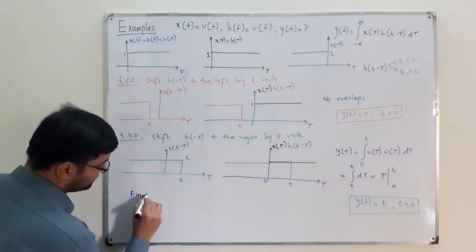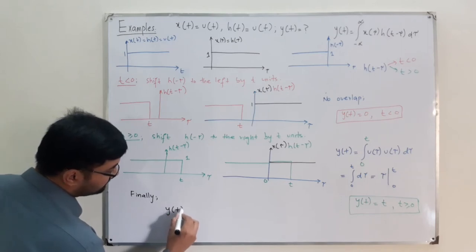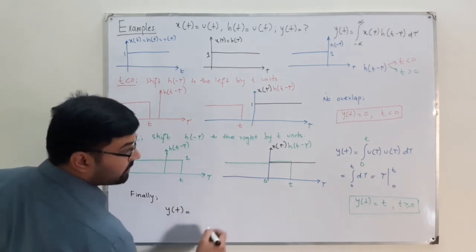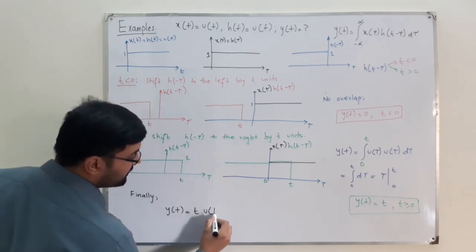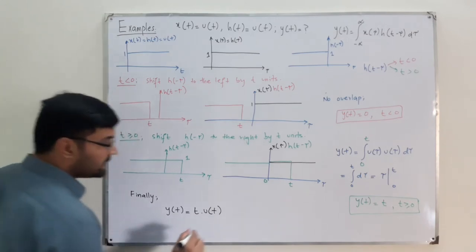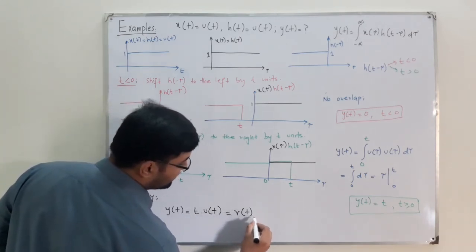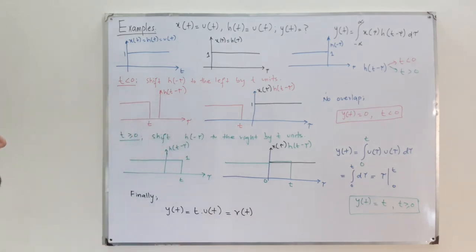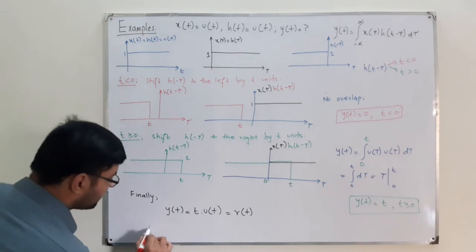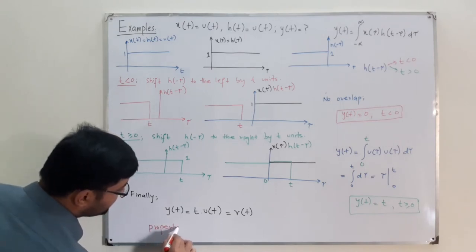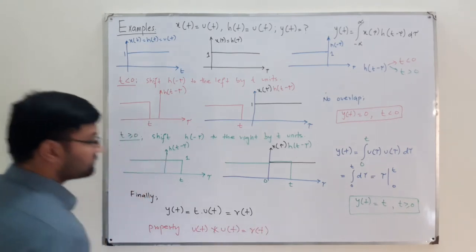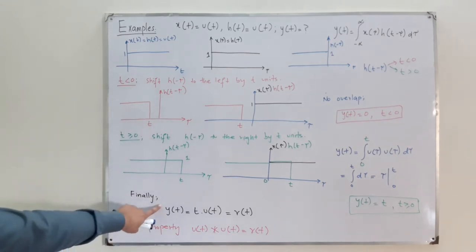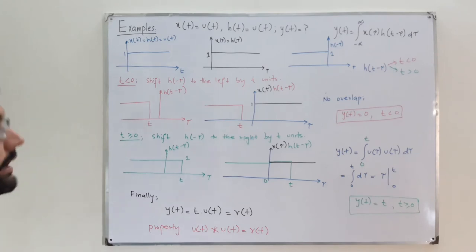Combining both cases: y(t) = 0 for t less than zero, and y(t) = t for t greater than or equal to zero. This can be written as y(t) = t·u(t), which is the ramp function r(t). So we derive the property: u(t) convolved with u(t) equals the ramp function r(t). That's the final answer for Example 1.